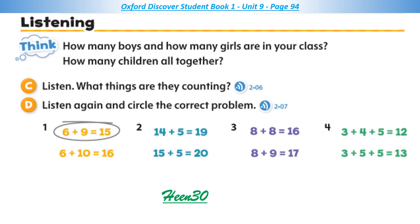D. Listen again and circle the correct problem. 1. I have 6 pens. You have 9 pens. How many pens do we have? 2. Our teacher has 15 rulers. We have 5 rulers. How many do we have together? 3. The girls have 8 pencils. The boys have 9 pencils. How many pencils do they have together? 4. May has 3 erasers. John has 4 and Ava has 5. How many erasers do they have?